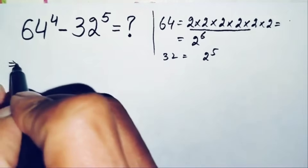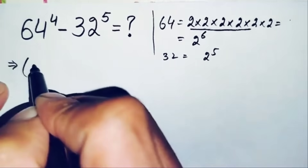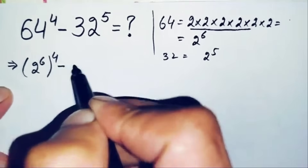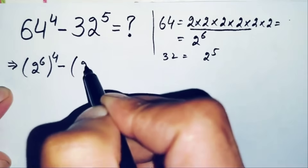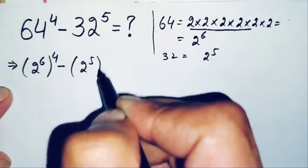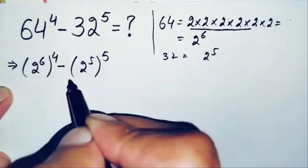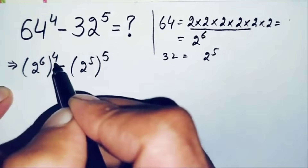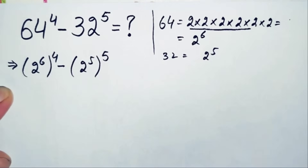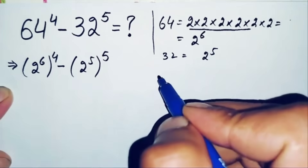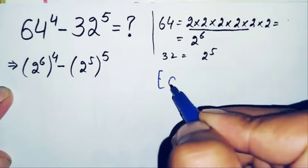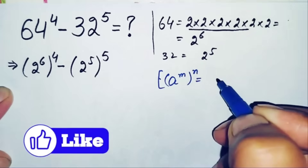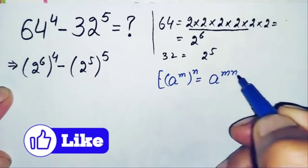So the equation becomes (2^6)^4 minus (2^5)^5. In these two terms we will use the exponential property: r raised to power m, raised to power n, which can also be written as r raised to power m times n.